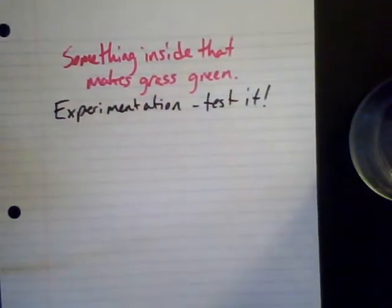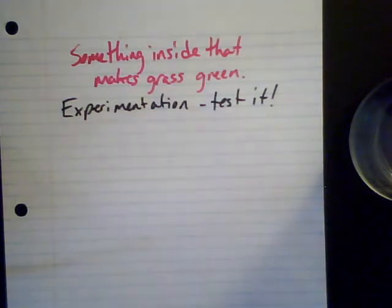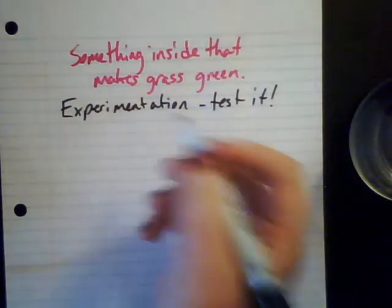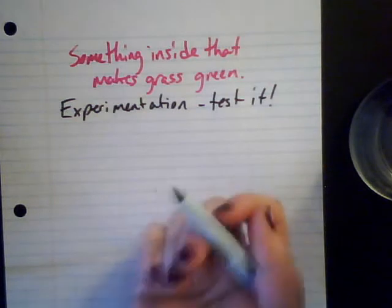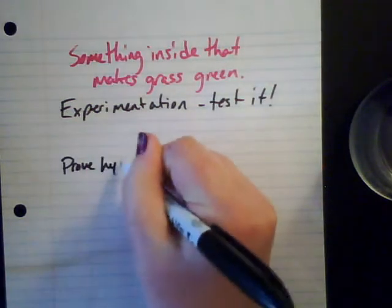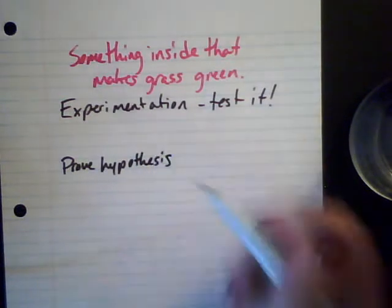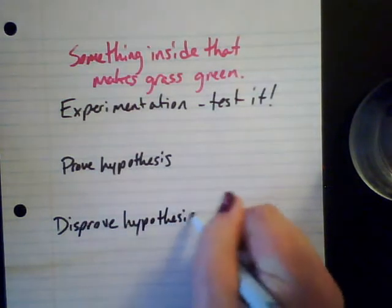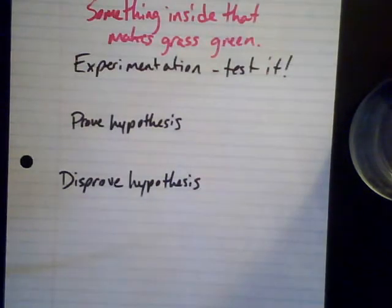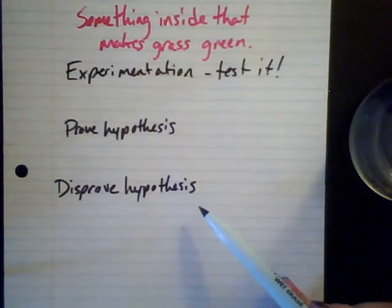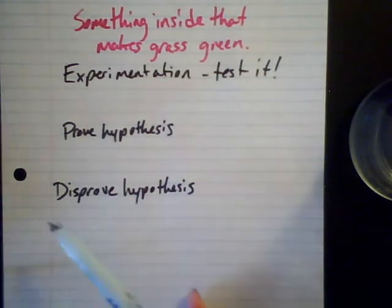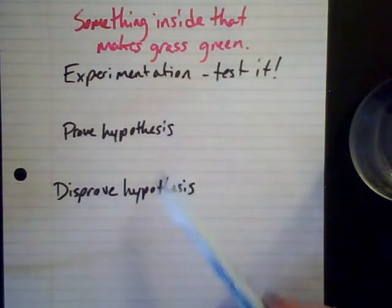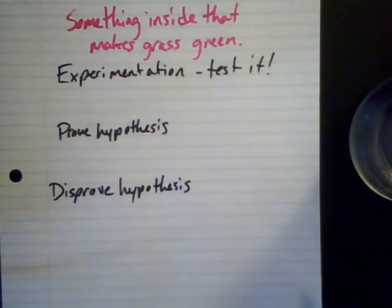How can I show there's something inside the grass making it green? Maybe I need to stick it in a blender and look at it under a microscope — whatever experimentation process I go through to test it. In the experimentation phase, I can either show that yes, my hypothesis is true, or I disprove it and show it isn't true. The key to science is all about disproving things. If we can't disprove the hypothesis, then we can tentatively say it's good, and we publish it.